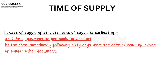For services, there are two criteria. The earliest date determines in which month the GST return is to be paid. The first criterion is the date of payment by the recipient. The second is 60 days from the date the service provider issued the invoice. Whichever is earliest, that month's GST return will include the RCM payment, and ITC is claimed the following month.